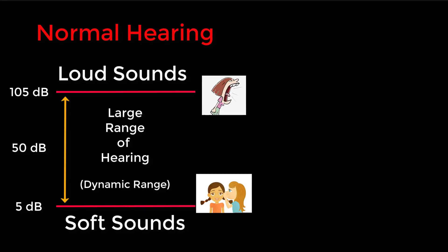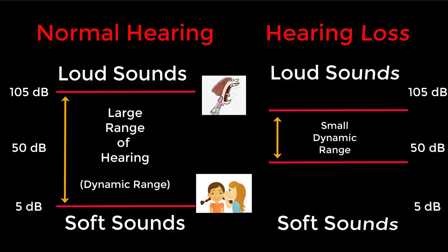Individuals with normal hearing have a large range of sounds that they can hear — we call this the dynamic range. They can hear very soft sounds and they can tolerate louder sounds at the same time, giving them a wide range of sounds that they can hear and hear comfortably. However, individuals with a hearing loss have a smaller dynamic range because their hearing loss requires that sounds need to be louder before they can barely hear them, and oftentimes louder sounds become uncomfortable at a lower level. This creates a very narrow range that all sounds must be compressed into if they want soft sounds to be audible and loud sounds to still be comfortable.